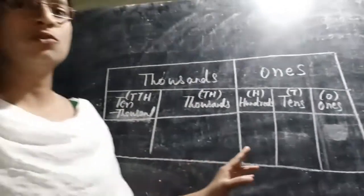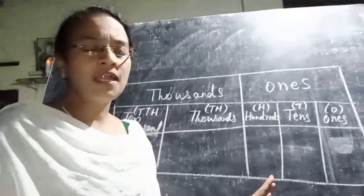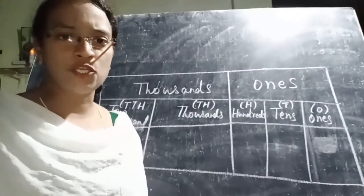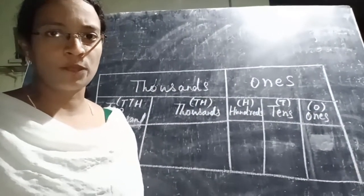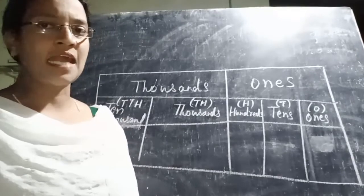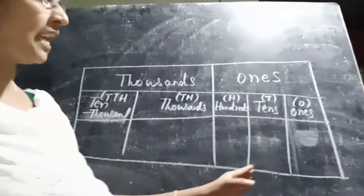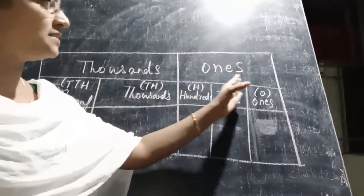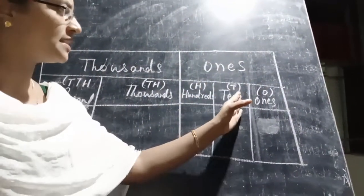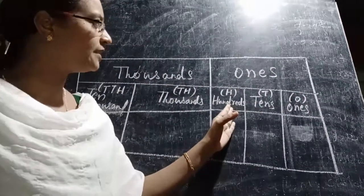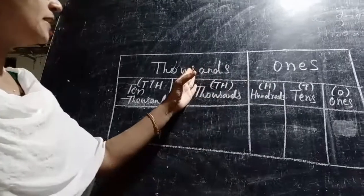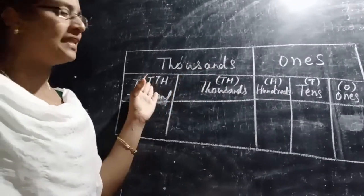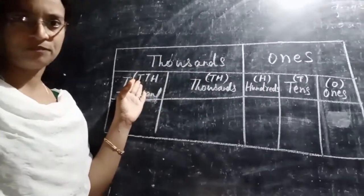In the Indian place value chart, a number is split into groups or periods. Starting from the right, the ones period has three places: ones, tens, and hundreds. The thousands period has two places: thousands and ten-thousands.